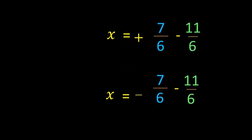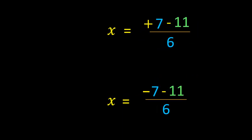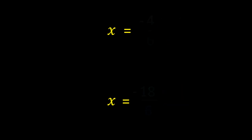To simplify, we split the roots: x = +7/6 - 11/6, and x = -7/6 - 11/6. Since the denominators are the same, we simplify the fractions. This gives one root as x = -4/6, and the other as x = -18/6.